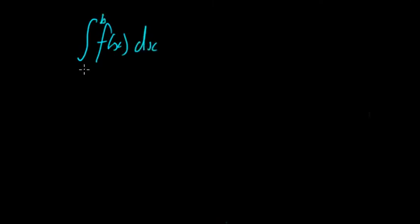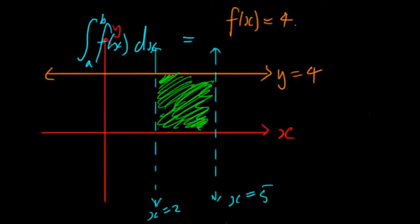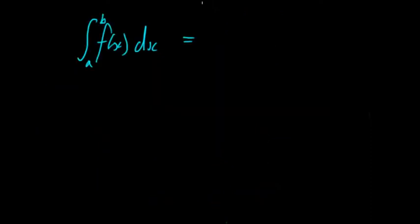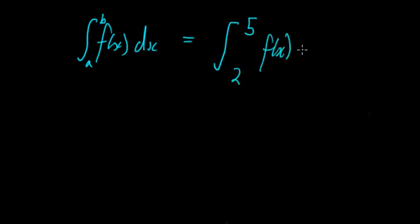We have these two points, which are called the terminals: b and a. With regards to this example, we want to find the area between 5 and 2, so these are the terminals 5 and 2. So we're going to get the integral from 2 to 5 of f(x) dx, and this will tell us the area.